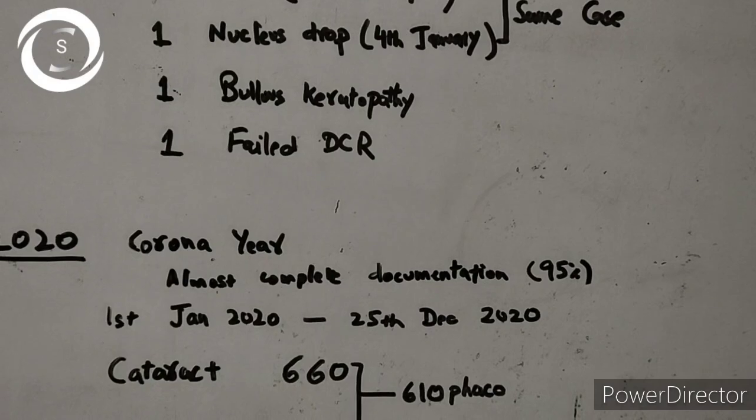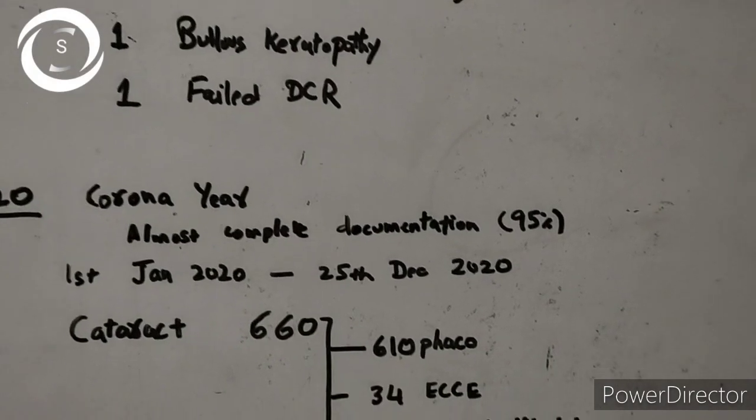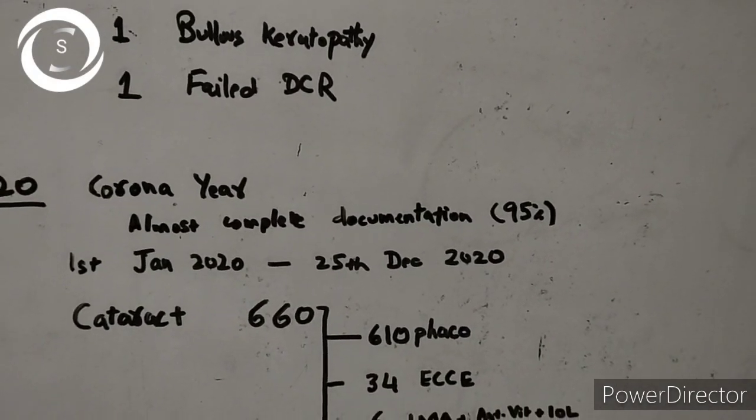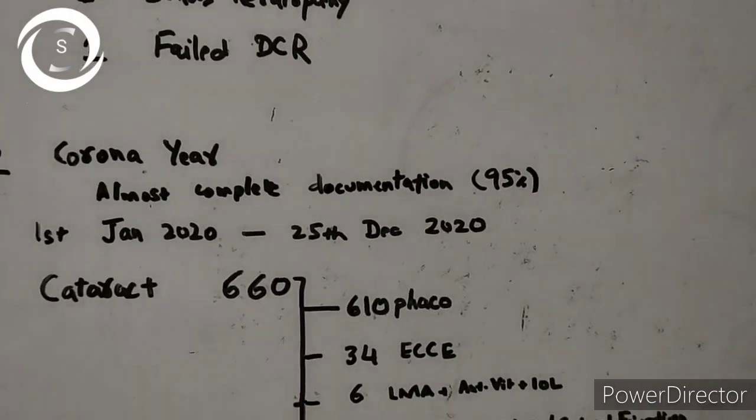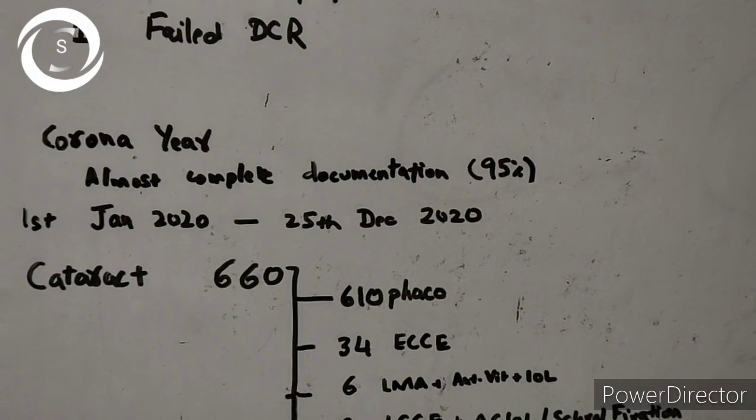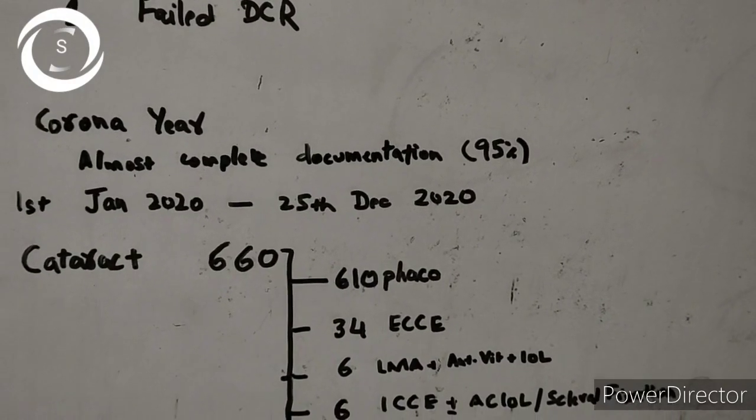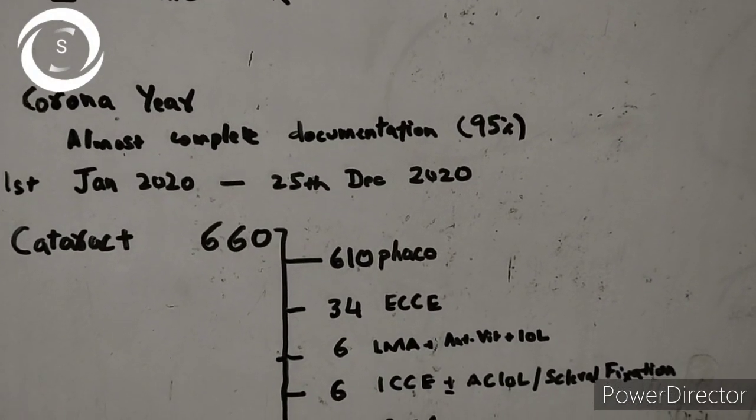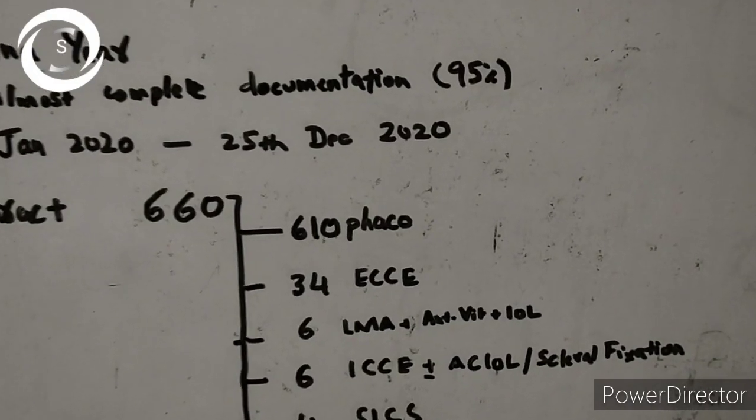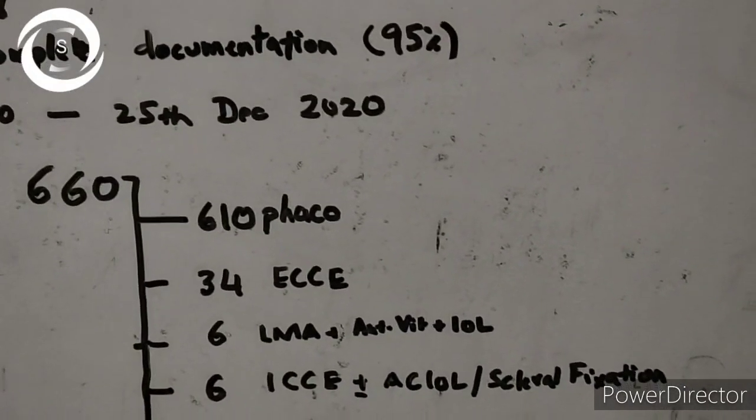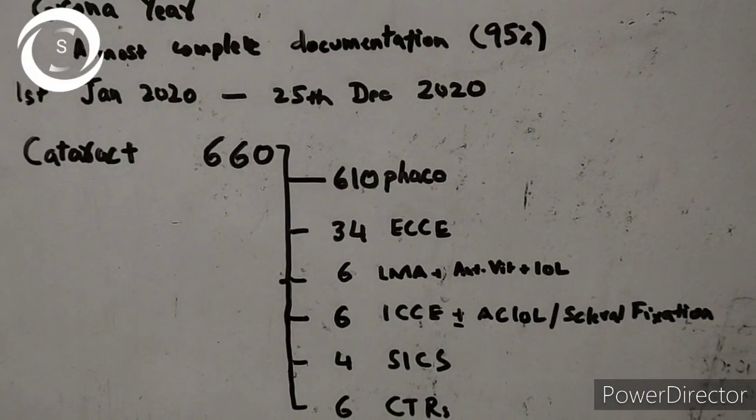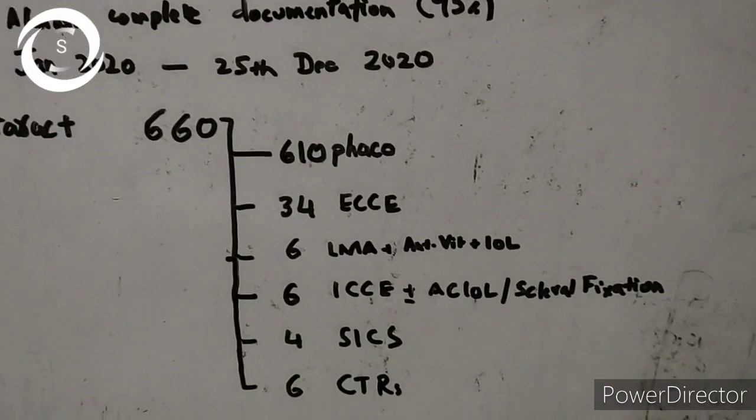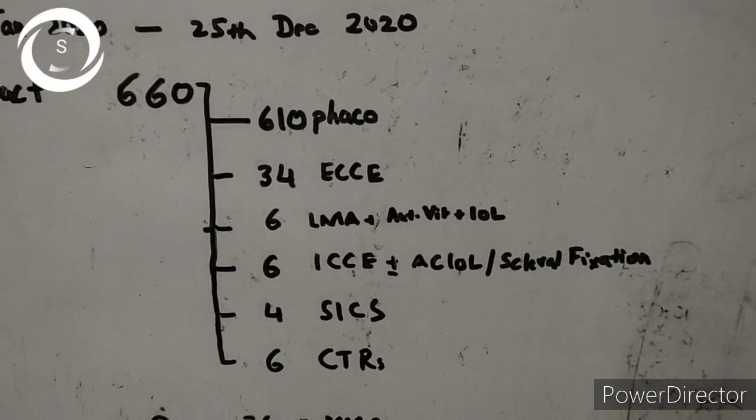First come the cataract surgeries. Total 660 cataract surgeries I have performed, out of which 610 were phaco, 34 extracapsular cataract extraction, 6 lens matter aspirations for congenital cataracts, 6 intracaps for subluxated traumatic pseudoexfoliative zonular dehiscence cataracts in which I have also implanted 6 CTRs.